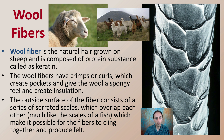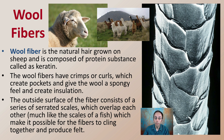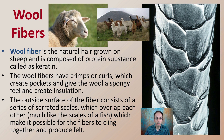Wool fibers have crimps and curls which create pockets and give the wool a spongy feel and create insulation — those air spaces allow it to have great insulating properties. The outer surface of the fiber consists of a series of serrated scales which overlap each other. Under the microscope they look like scales of a fish, making it possible for these fibers to cling together and produce felt. This insulating property is also found in llamas and alpacas.